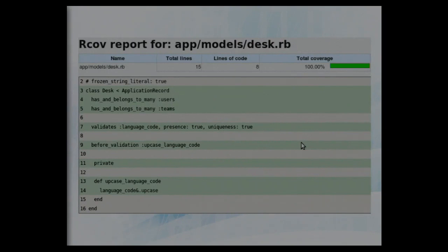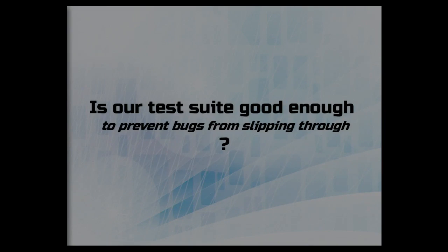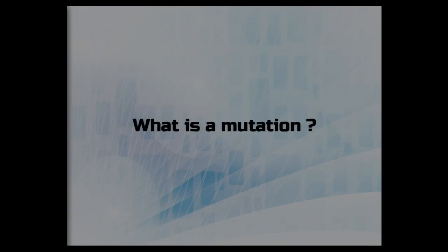Let's take this piece of code. It's a simple class describing one model in a Rails application. There's only one field that goes into the database, and only one method — a really stupid method — that just returns an uppercase string of that field. As you can see from this screenshot, this class has 100% code coverage. And the question I'm asking myself as a tester is: is my test suite good enough? Good enough meaning whenever there's a change in the software under test, is my test suite able to detect if this change will break something, or does the change go undetected and possibly go into production? Mutation testing can help you answer this question, but first I need to explain what a mutation is.